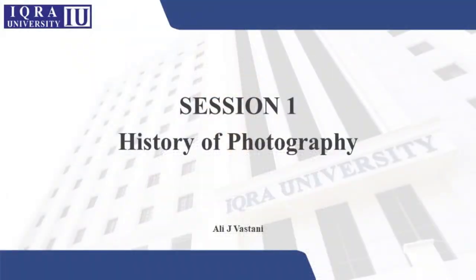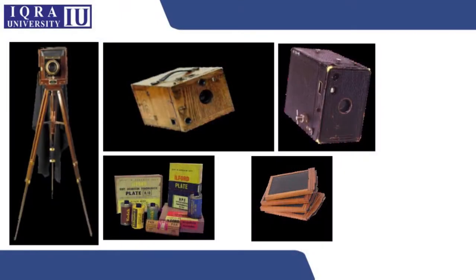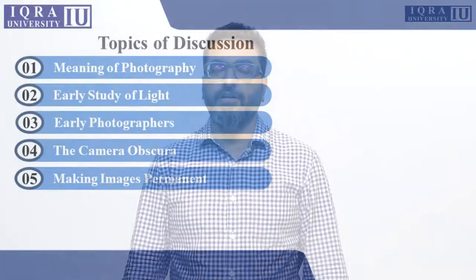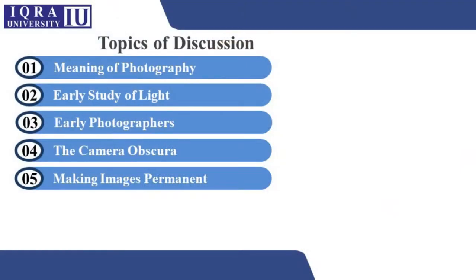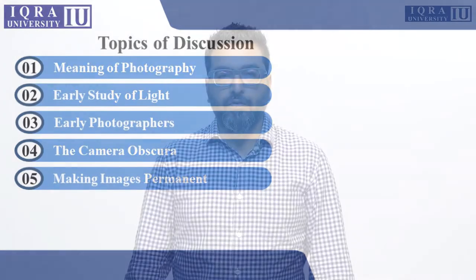Hello everyone, welcome to the first session of photography class. This is session 1 and today we will be looking at the history of photography. As you can see on the screen, ancient cameras and a lot of other equipment related to photography. The agenda of this session would be: meaning of photography, early study of light, early photographers, the camera obscura, and making images permanent.